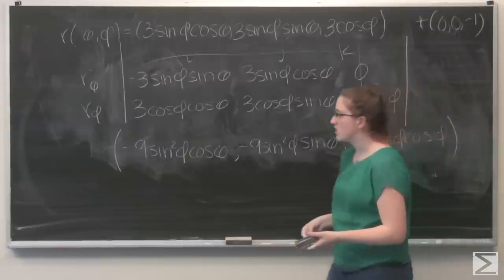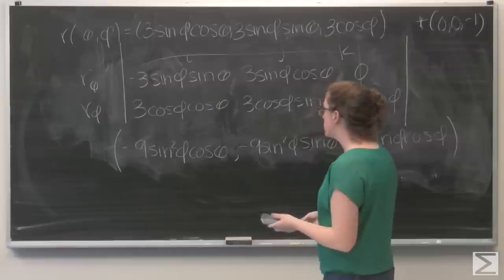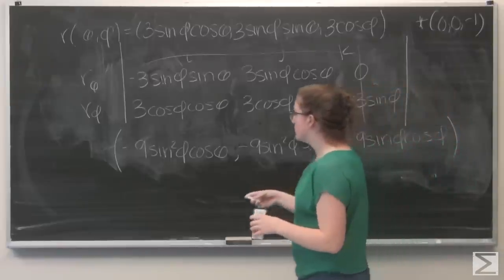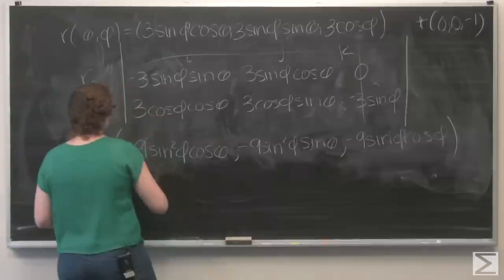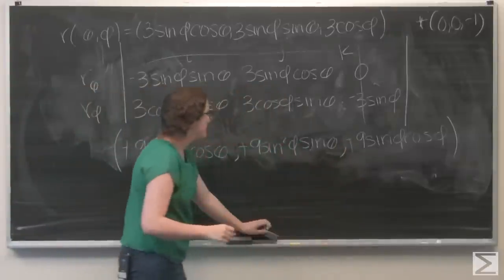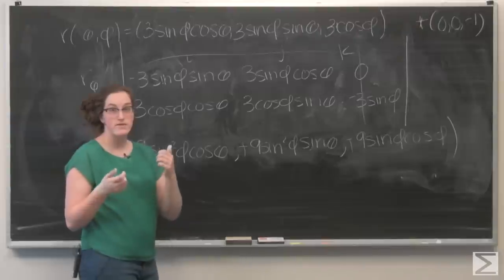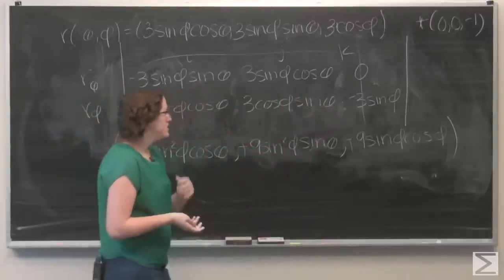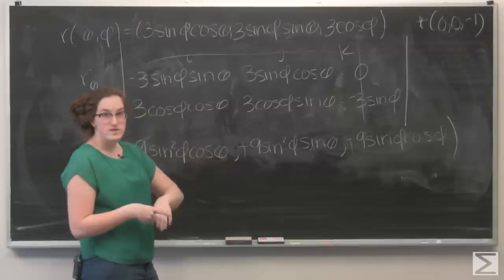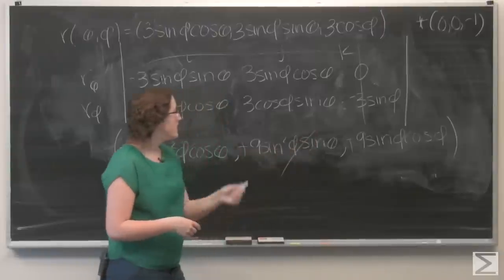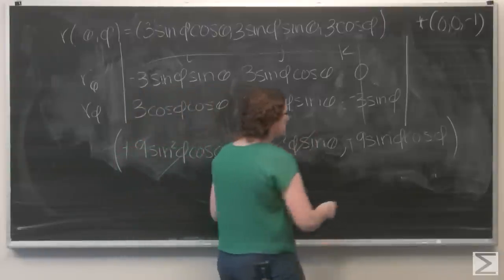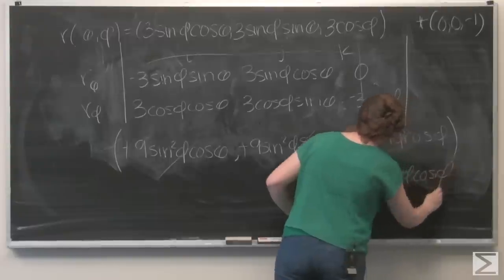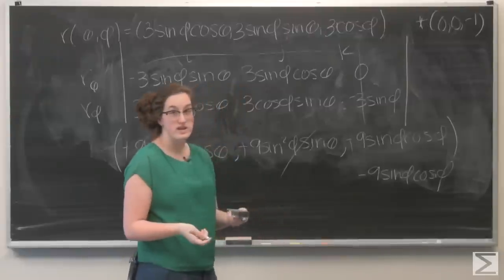Let me make sure I'm oriented outward. I can see that with all three negative terms I'm not, so I'm going to switch all the signs to orient the vector outward. Now I want to dot (9 sin²φ cos θ, 9 sin²φ sin θ, 9 sin φ cos φ) with (0, 0, -1). The first two terms become zero, and the third term becomes -9 sin φ cos φ. Now I'm ready to integrate.